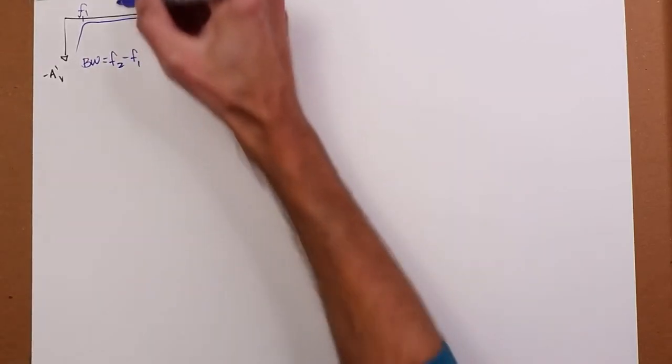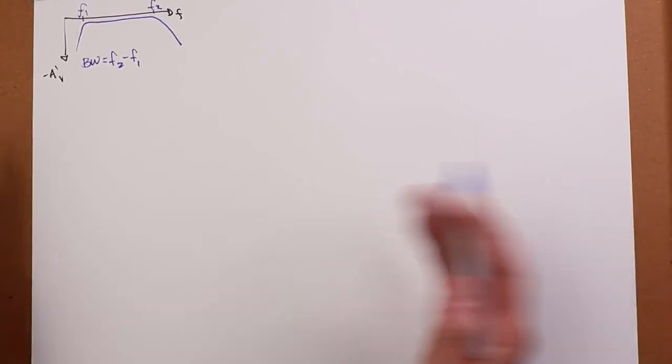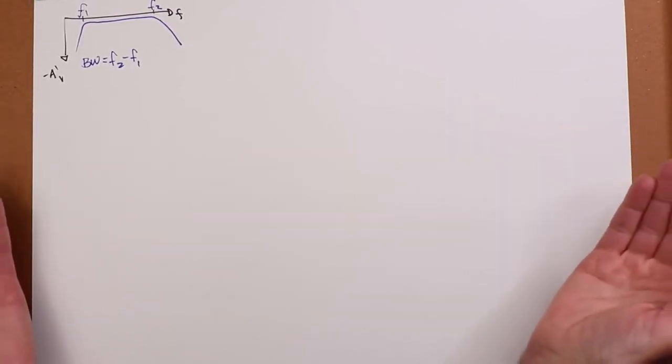And I would compare that to the center frequency, f0. If that's really wide, for example, in this case, 20 hertz to 20 kilohertz, it's a thousand to one ratio.